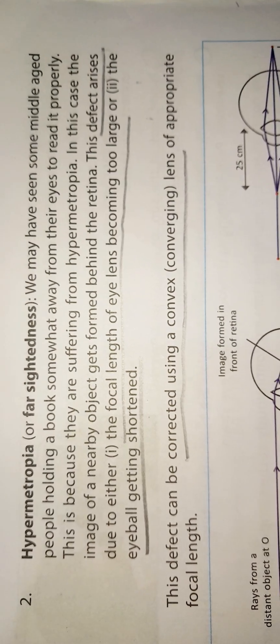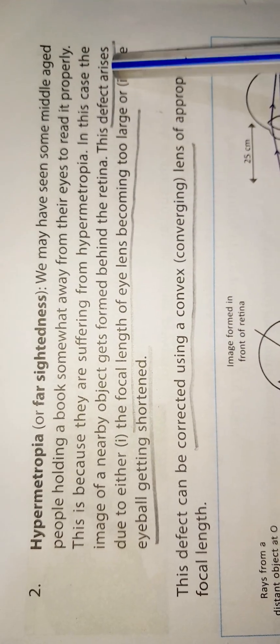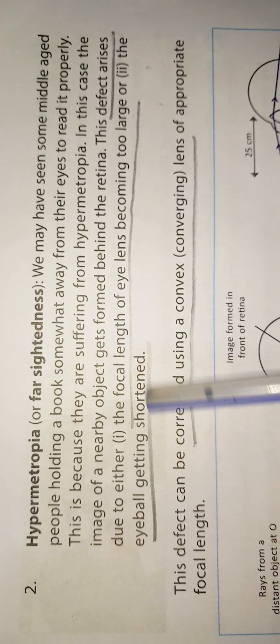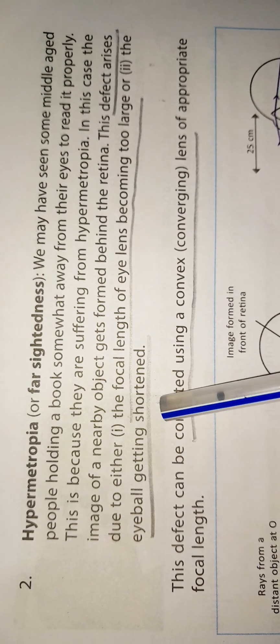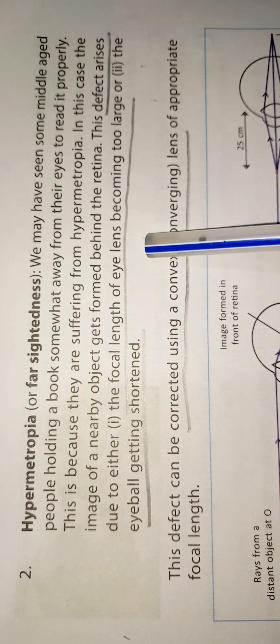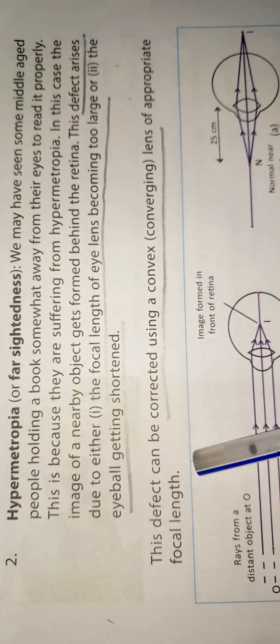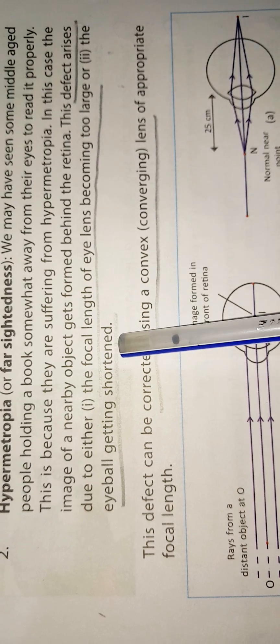Then we come to hypermetropia or farsightedness. We may have seen some people holding a book somewhat away from their eyes to read it properly. This is because they are suffering from hypermetropia. In that case, the image of a nearby object forms behind the retina. This defect arises due to either the focal length of the eye lens becoming too large or the eyeball getting shortened.